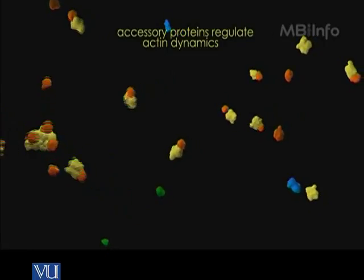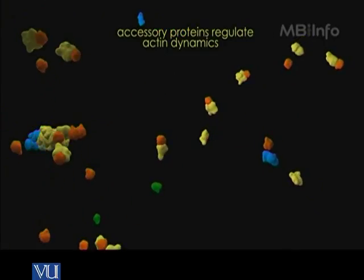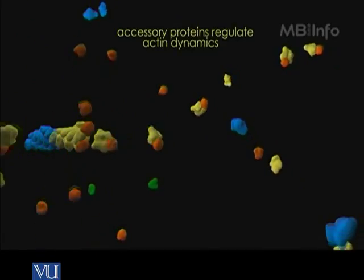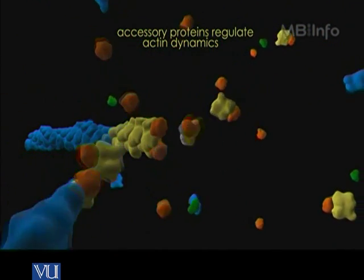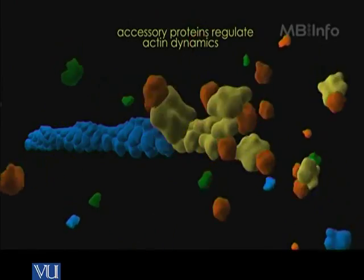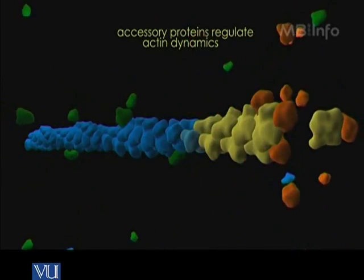Here we have nucleation of actin filaments. As the actin filament is forming, the monomers are hydrolyzing their ATP into ADP. This blue structure is made up of monomers which have hydrolyzed their ATP molecule into ADP. As the polymer lengthens, the ATP monomers are converting into ADP monomers and the length of the blue part of the filament is increasing.